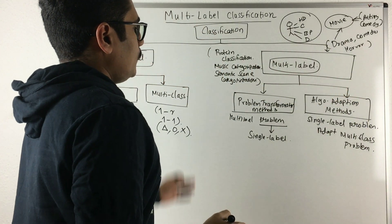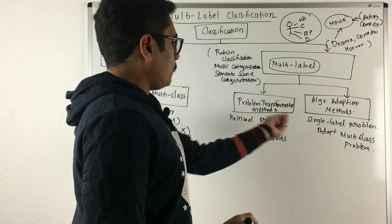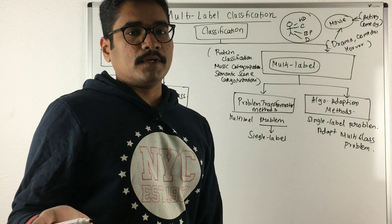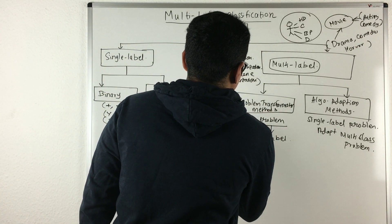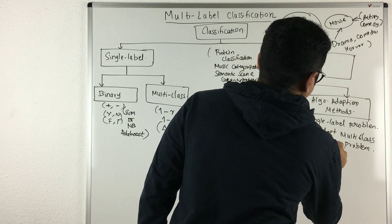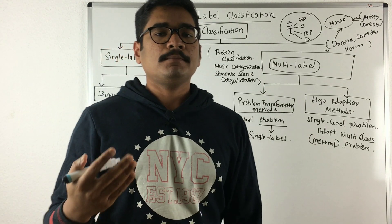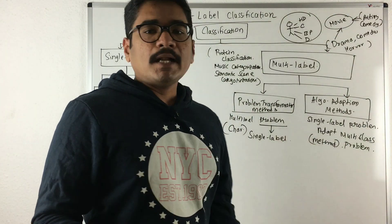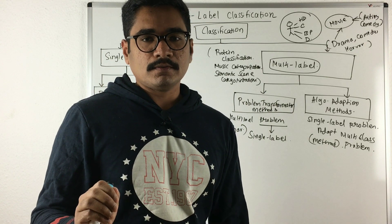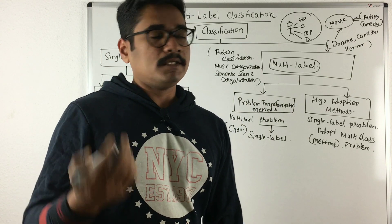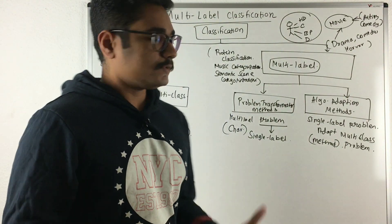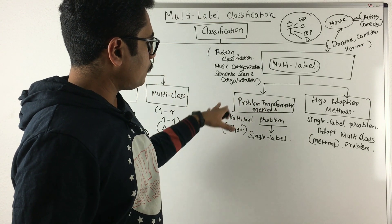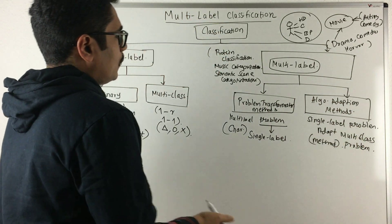To give an example for problem transformation and algorithm adaptation, consider movie actors. Actors act in two different ways: character acting and method acting. In character acting, they try to become that particular character or role assigned to them. In method acting, based on their ideology and observations, they adapt themselves and create the character in their own way. These two approaches are analogous to problem transformation and algorithm adaptation methods.